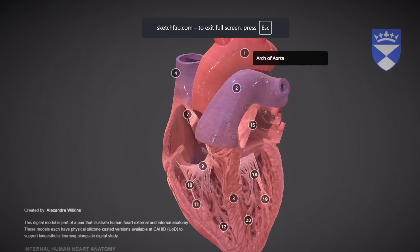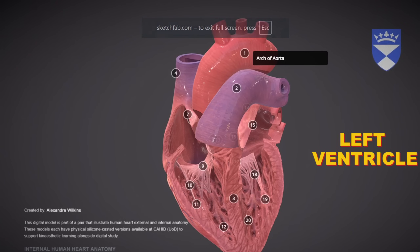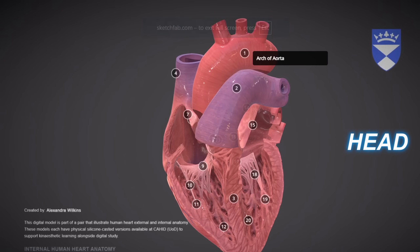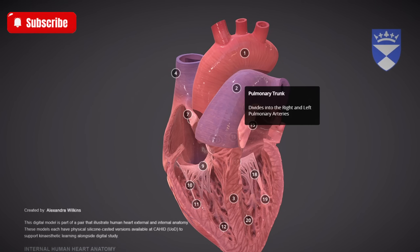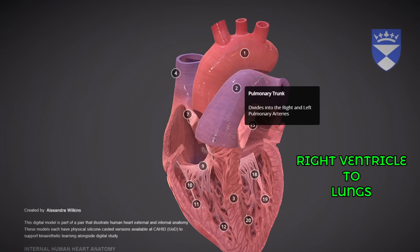1. Arch of Aorta: This is the main curved portion of the aorta, the largest artery in the body. It carries oxygen-rich blood from the left ventricle and distributes it to the head, arms, and the rest of the body through its major branches. 2. Pulmonary Trunk: This large vessel carries deoxygenated blood from the right ventricle to the lungs for oxygenation, splitting into the right and left pulmonary arteries.